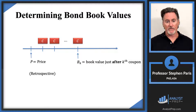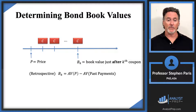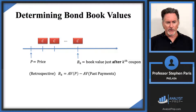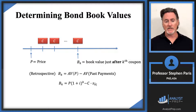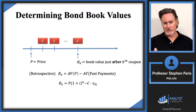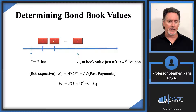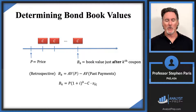The book value just after the kth coupon, retrospectively, is the accumulated value of the price minus the accumulated value of the payments. Specifically, the accumulated value of the price is P times (1+i)^k, and the accumulated value of the past payments — since they're level — is C times s-angle-k. That's the retrospective way of calculating a book value just after the kth coupon.